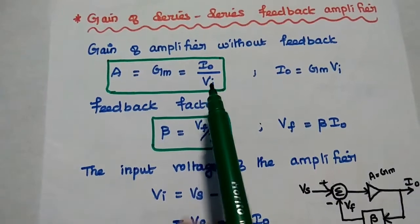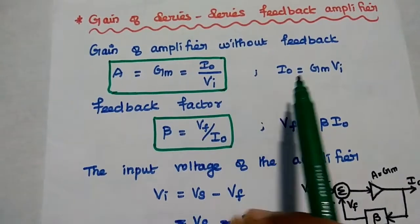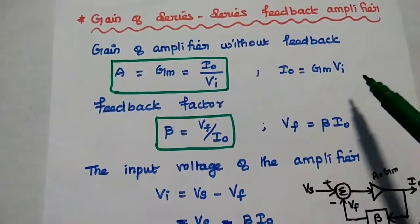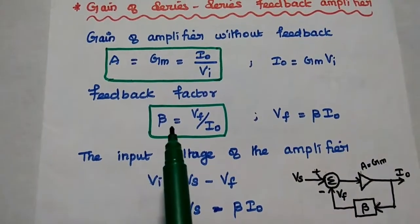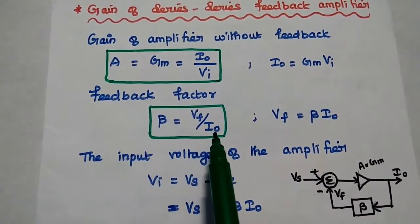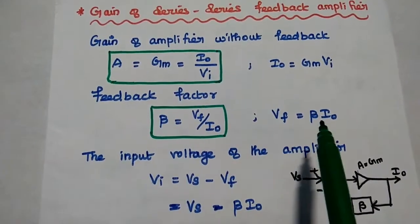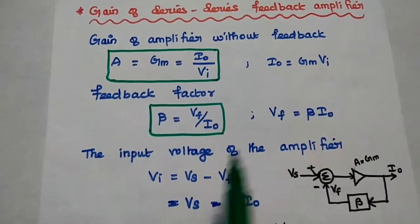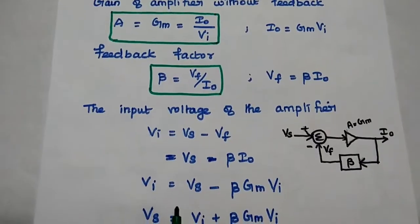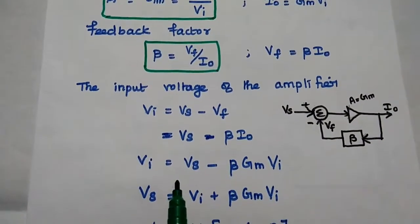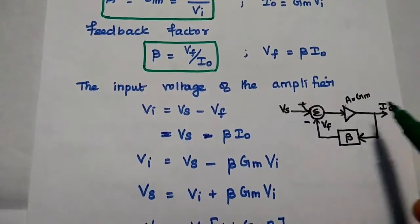From this, we can get that output current IO is equal to Gm into VI. Then the feedback factor beta is equal to Vf by IO. From this, we can get Vf is equal to beta into IO. Next, we are going to get the value of the input voltage of the amplifier, so for that we can consider this diagram.